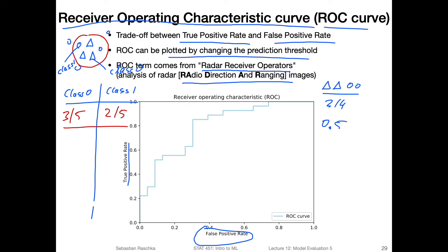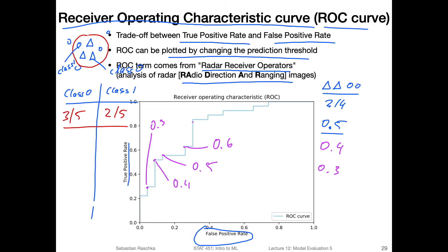We can actually shift this threshold because it can be arbitrary, depending on whether we want to optimize for the true positive rate or the false positive rate. The ROC curve measures how the classifier's performance in terms of true positive rates and false positive rates changes as we change the threshold — for example, using 0.4 or 0.3 instead of 0.5. Each jump in the line corresponds to a different threshold, showing how sensitive the classifier is to the threshold setting.